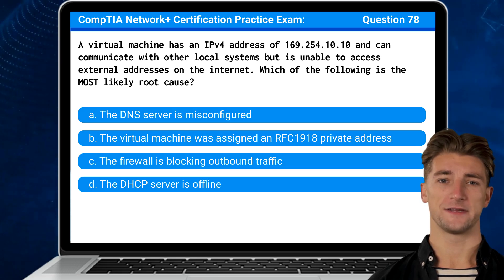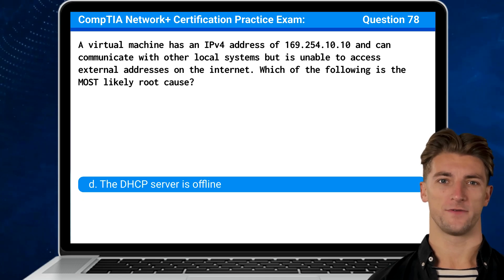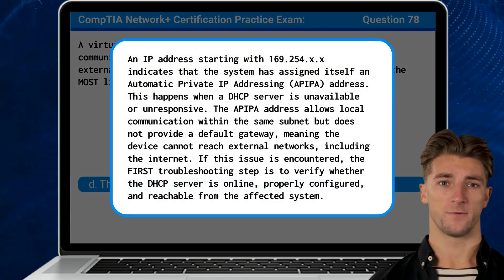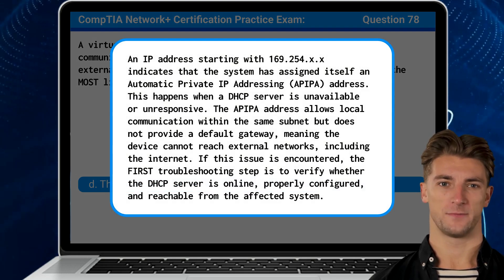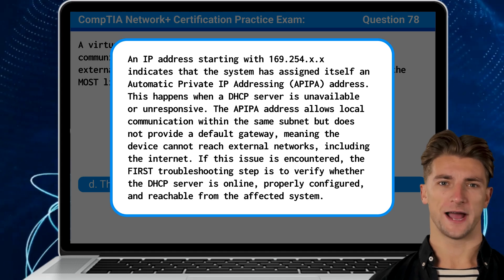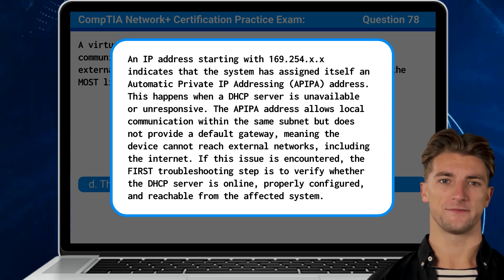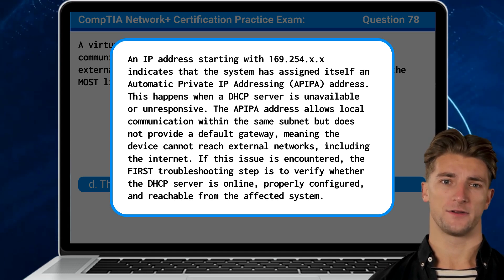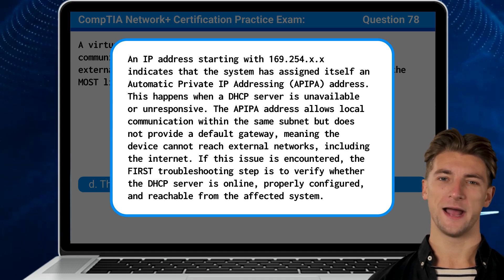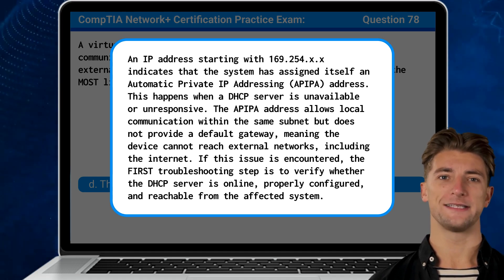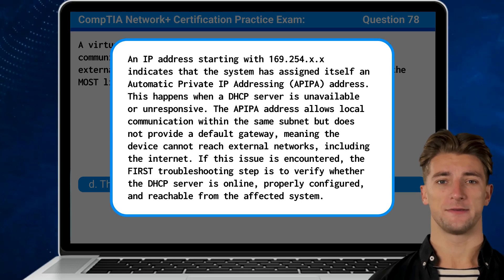The answer is D: The DHCP server is offline. An IP address starting with 169.254 indicates that the system has assigned itself an Automatic Private IP Addressing, or APIPA, address. This happens when a DHCP server is unavailable or unresponsive. The APIPA address allows local communication within the same subnet, but does not provide a default gateway, meaning the device cannot reach external networks.